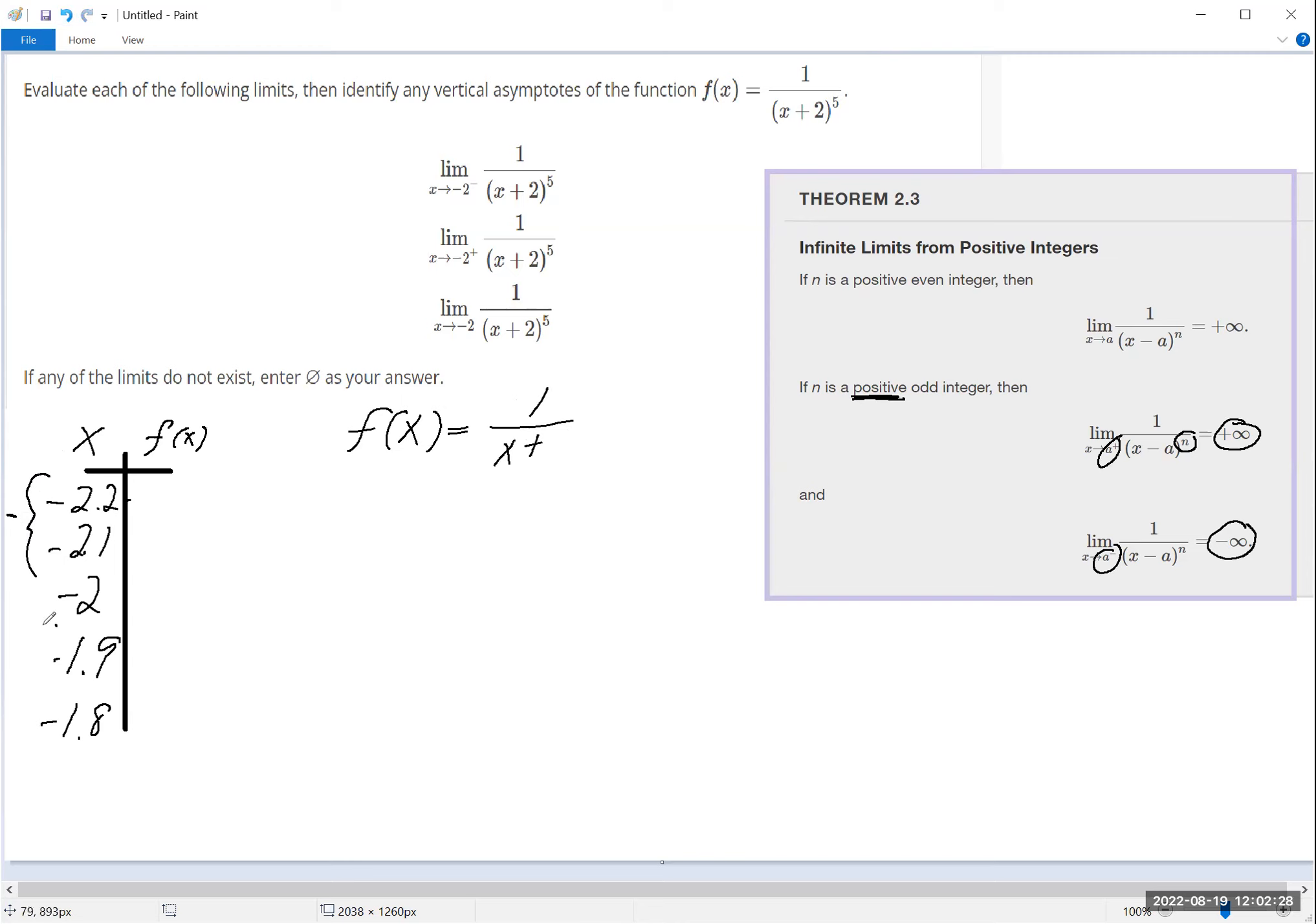Looking at this example here without the exponent, and then knowing that there is obviously going to be an asymptote at negative 2, because if I plug in a negative 2 this goes to zero. But let's try to see what happens as you approach from the left first.